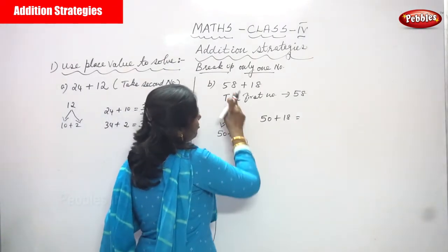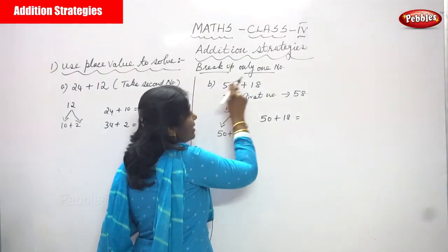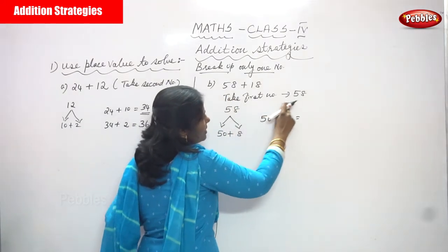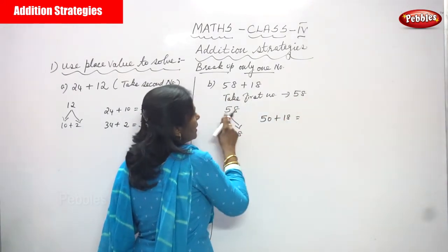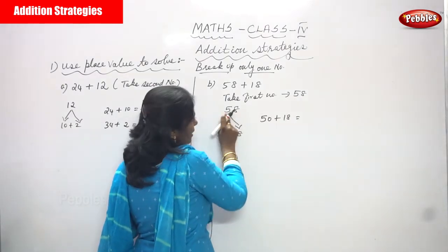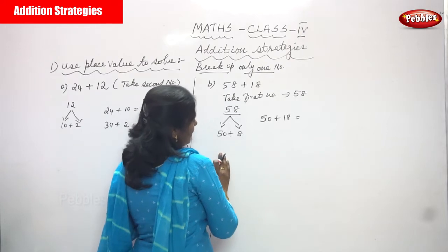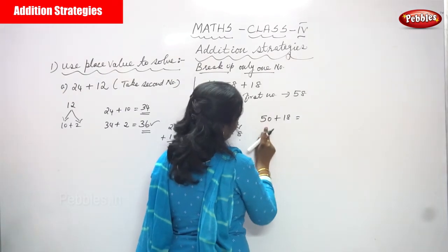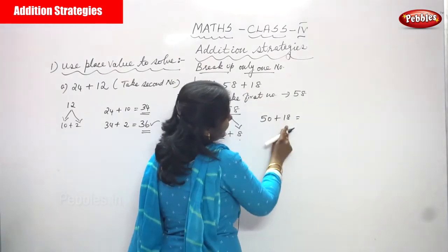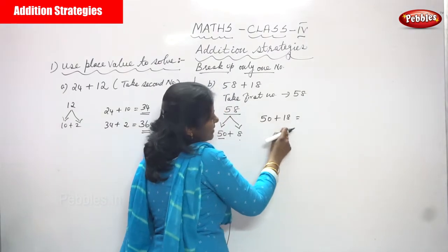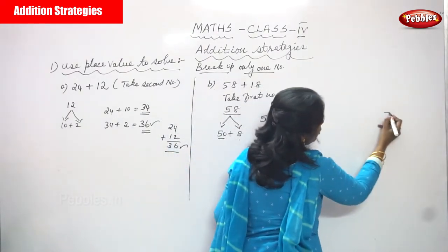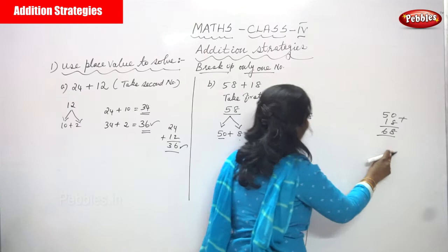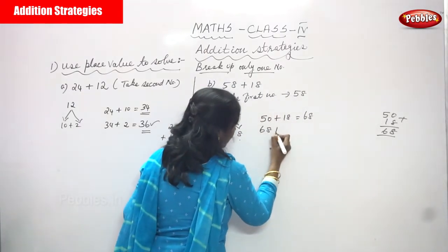The second example is 58 plus 18. 58 is the first number and 18 is the second number. This time we take the first number 58 and split it: 58 means 50 plus 8. The tens place is 50, so we write 50 first, then add the second number 18: 50 plus 18 gives 68.